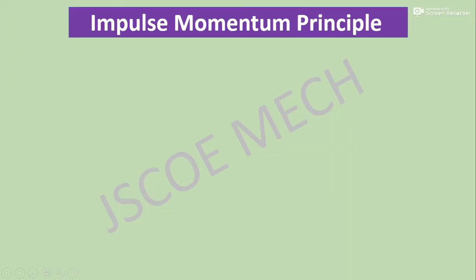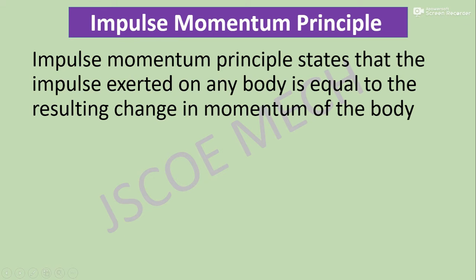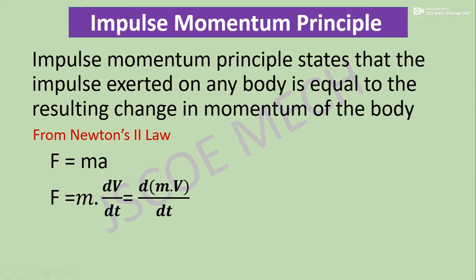The impulse momentum principle is used to find the force. It states that the impulse exerted on any body is equal to the resulting change in momentum of the body. From Newton's second law we can write F equals mass into acceleration, which is further m into dv/dt, or d(mv)/dt.